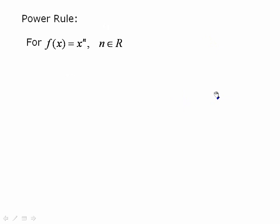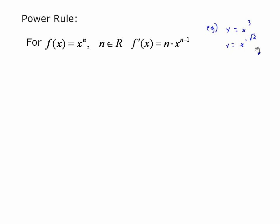The power rule is very important. Any time you're given a term with an exponent that's a real number — so this would be, for example, y equal to x to the 3, or y equal to x to the negative root 2 — real numbers for the exponents. The derivative is always equal to n, the exponent, multiplied by x to the n minus 1.